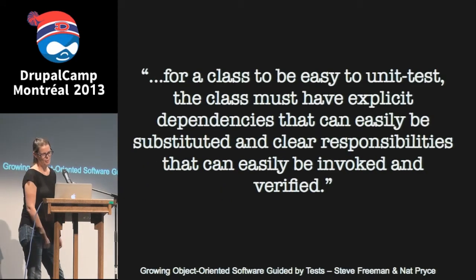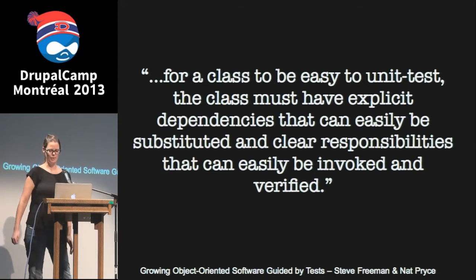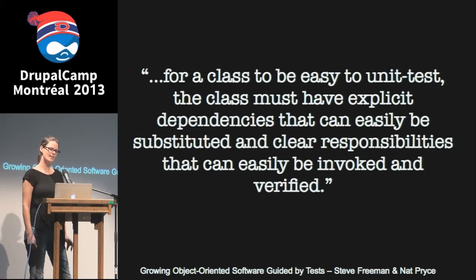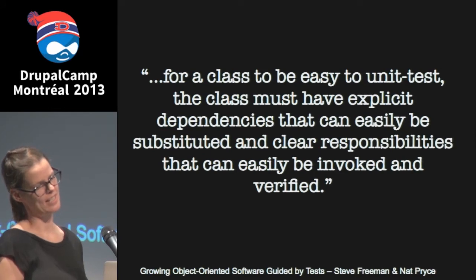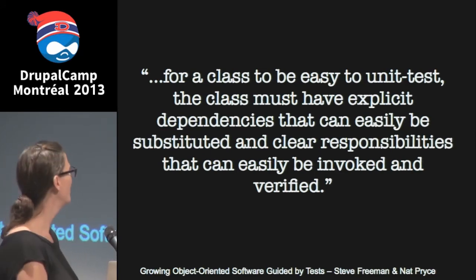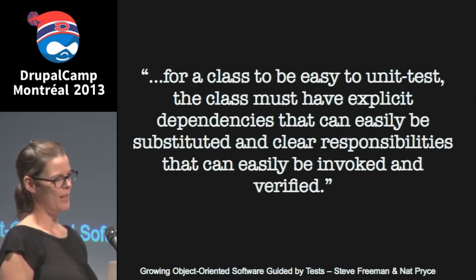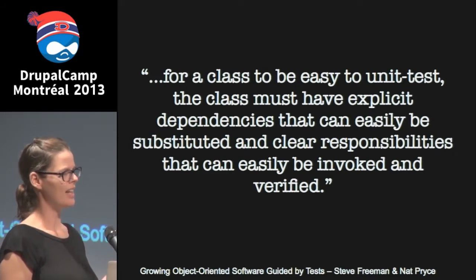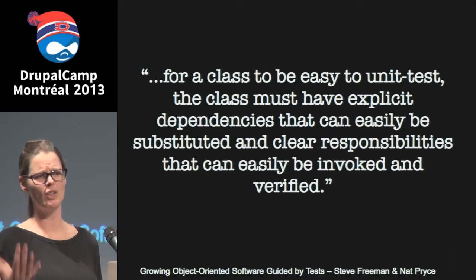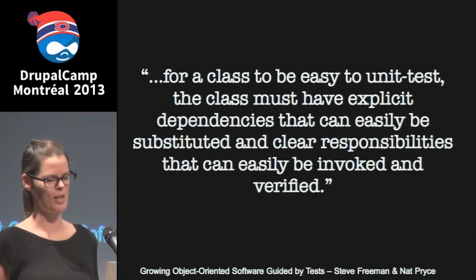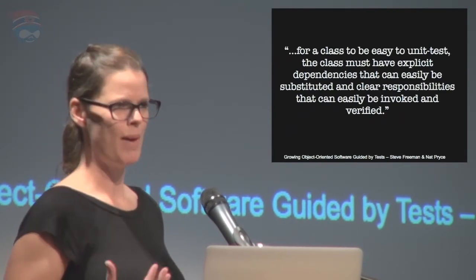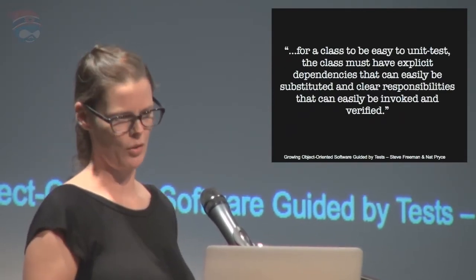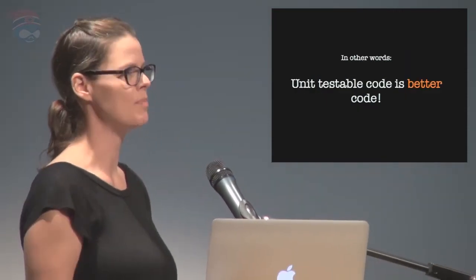Here's a quote from the book 'Growing Object-Oriented Software Guided by Tests': 'For a class to be easy to unit test, the class must have explicit dependencies that can easily be substituted, and clear responsibilities that can easily be invoked and verified.' Doesn't that just sound really reasonable? For a class to be unit testable, you have to do things that just make sense anyway as a way of writing your code. In other words, unit testable code is better code.